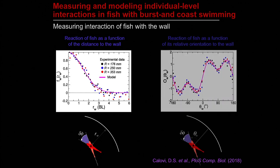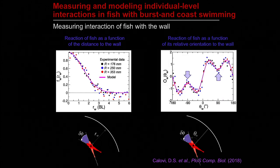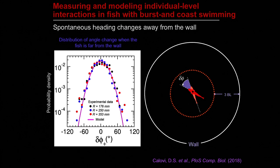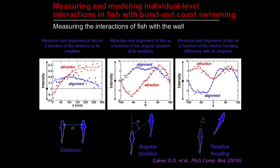We also observe that the intensity of the fish reaction is strongly reduced when a fish is parallel to the wall — at minus 90 or 90 degrees. So when the fish is parallel to the wall, it seems to not really interact with the wall, and when it is far from the wall, it no longer interacts with it. In this situation, the distribution of angular changes between two successive kicks is a narrow Gaussian peaked at zero, which introduces a kind of directional inertia in the fish movement.